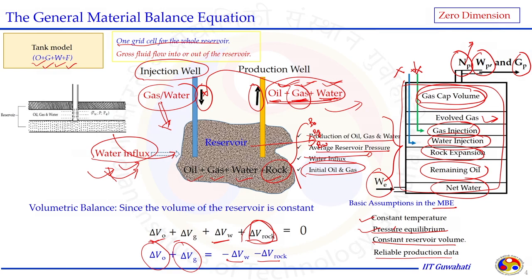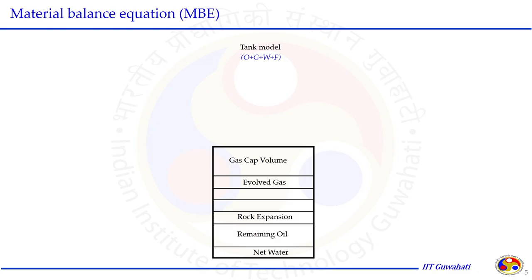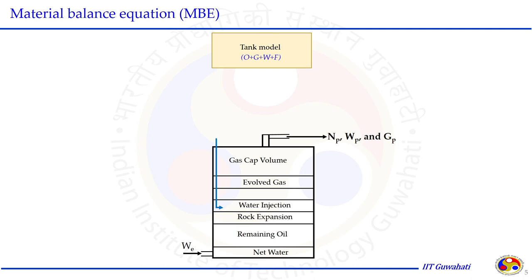This information helps predict reservoir performance and set screening criteria for implementing secondary and tertiary recovery processes. The general material balance uses SPE-approved standard nomenclature: N for oil, W for water, G for gas, subscript P denoting cumulative performance, We for water encroachment. This nomenclature is worldwide acceptable for the material balance equation.